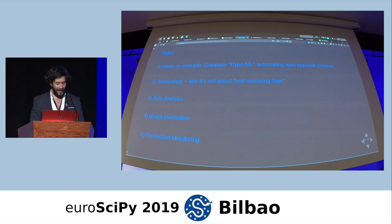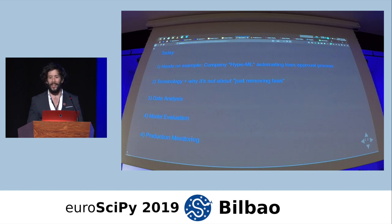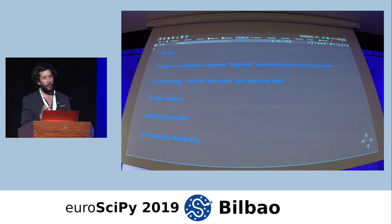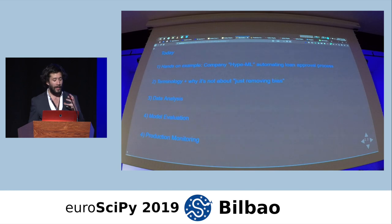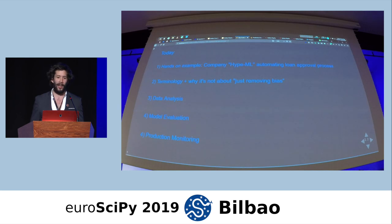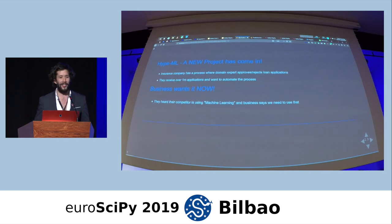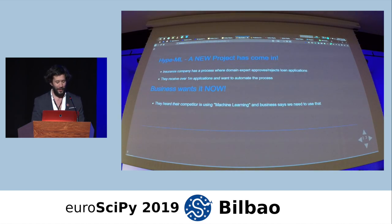To get started today, I'm going to cover a hands-on example, and what better way to go through a new topic than using a case study. We're going to be building a startup called HypeML, and we are going to be automating a loan approval process in an insurance company — because what could go wrong there? We're going to cover terminology, dive into why it's not just about removing bias, and break down the three steps involved: data analysis, model evaluation, and production monitoring.